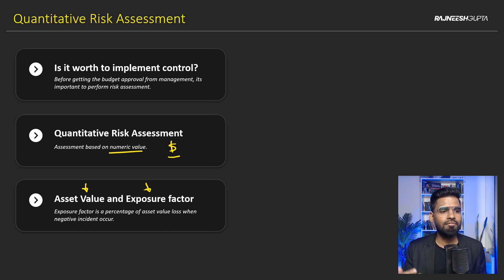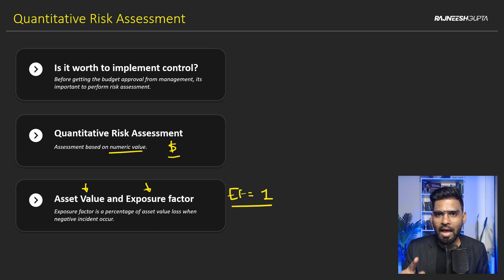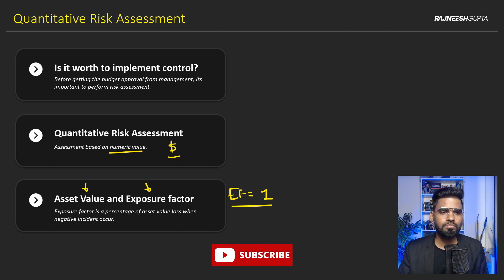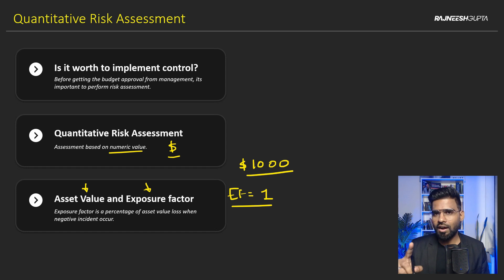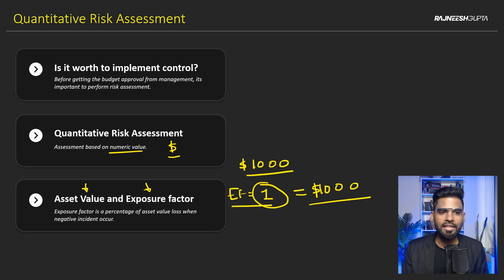The Exposure Factor gives you the idea about the percentage of asset value lost when a negative incident happens — for example, if a device goes offline, what would be the loss for that day. If the Exposure Factor is 1, that means one incident causes us to lose everything. If the asset value is $1,000 a day and EF is 1, we lose $1,000. If EF is 0.5, we lose $500 per day. That's how EF works.